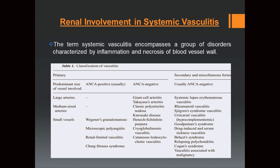The term systemic vasculitis encompasses a group of disorders characterized by inflammation and necrosis of blood vessels. The Chapel Hill consensus conference divides vasculitis into three broad groups: large arteries, medium-sized arteries, and small-sized arteries. Among the small vessel vasculitides, Wegener's granulomatosis, microscopic polyangiitis, renal-limited vasculitis, and Churg-Strauss syndrome all usually cause pauci-immune crescentic glomerulonephritis.